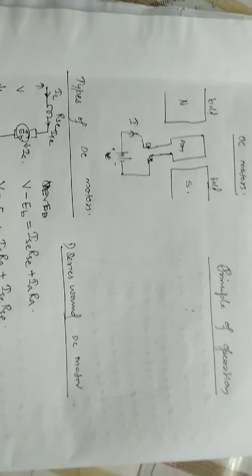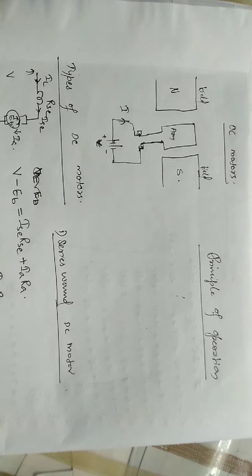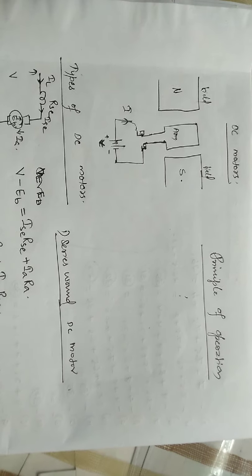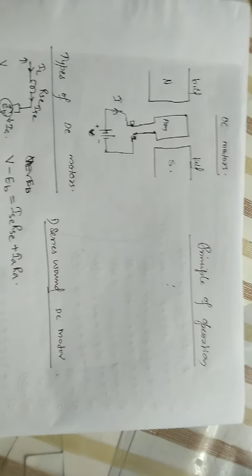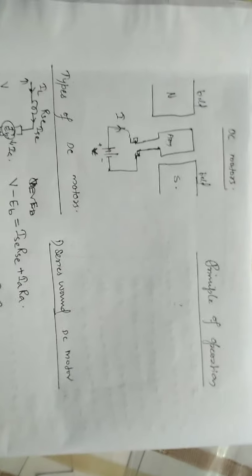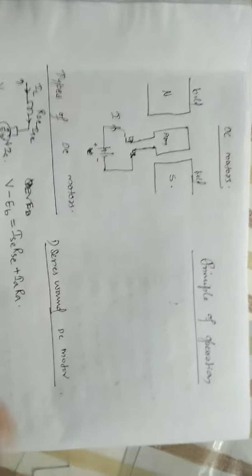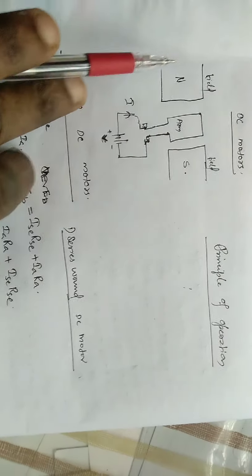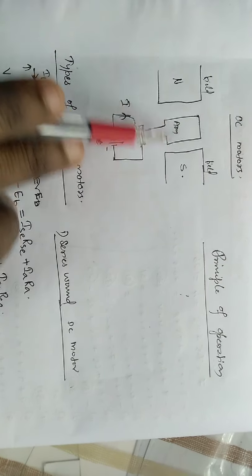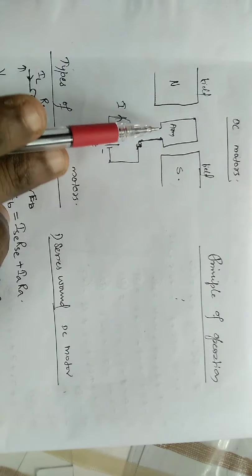Construction-wise, both DC generator and DC motor are the same. DC motor and DC generator are constructionally similar. The construction is the same and the magnetic field and armature are also the same.